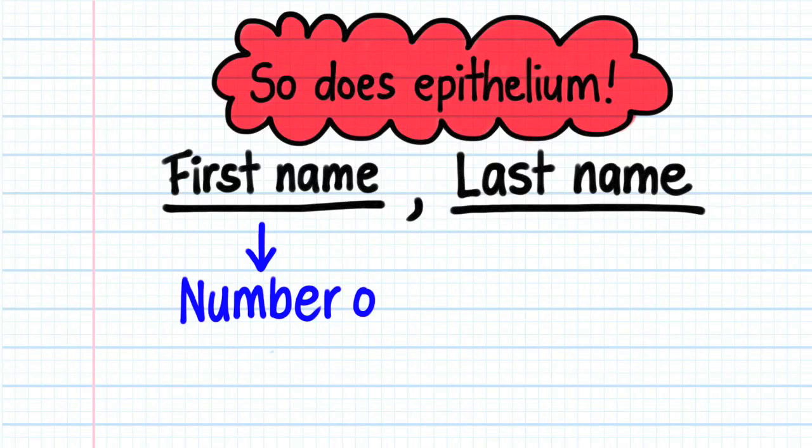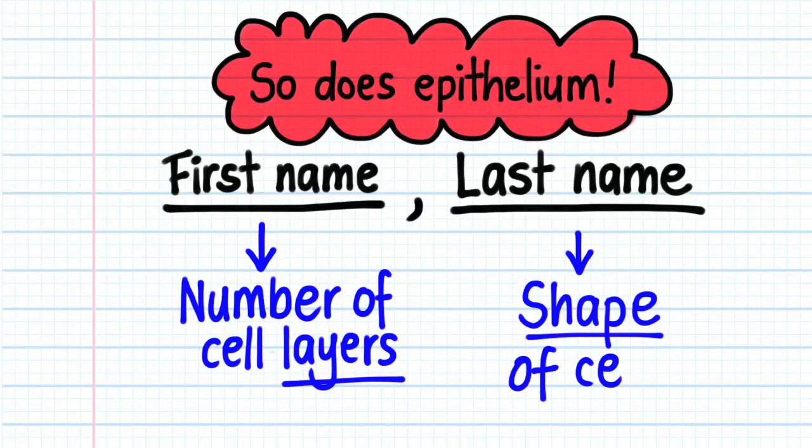In epithelial tissue, the first name always indicates the number of cell layers, whilst the second name indicates the shape of the cells.